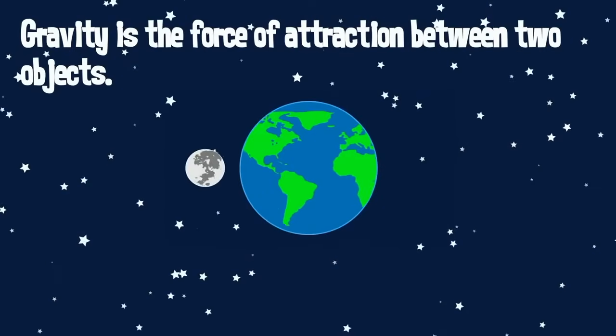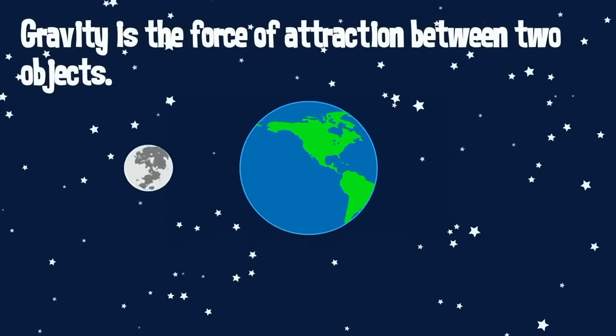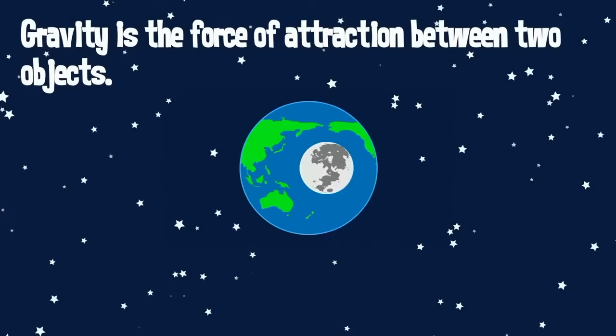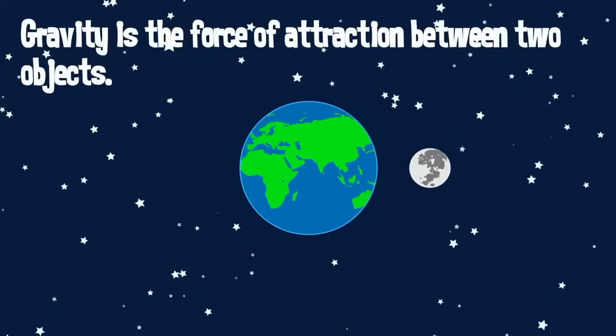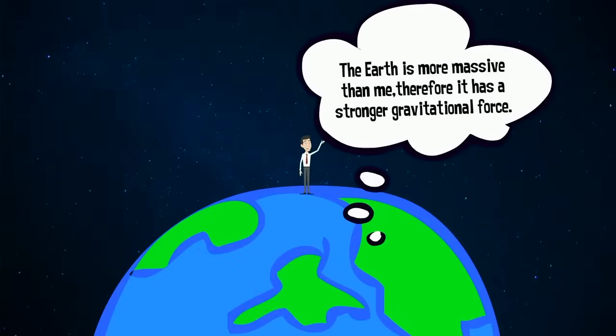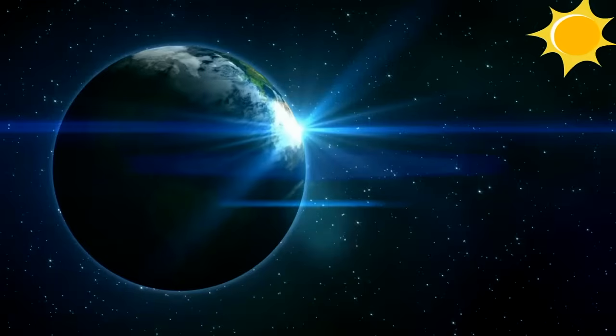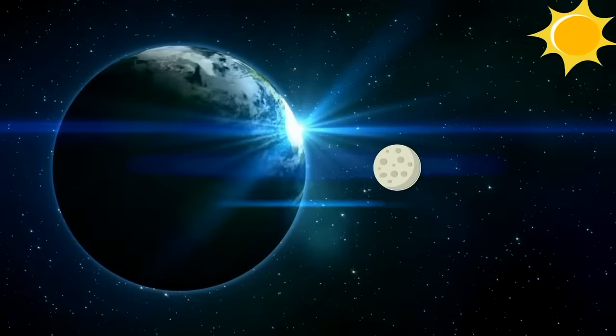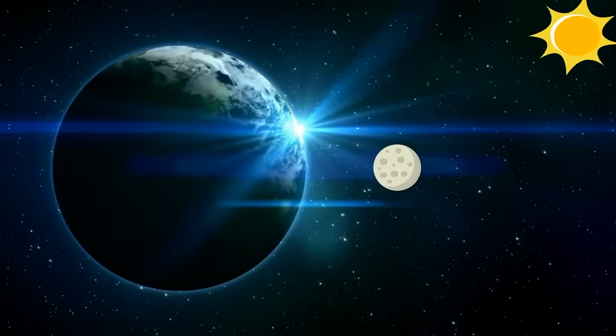Up first, gravity is the force of attraction between two objects. Anything that has mass also has gravity. Objects with more mass have more gravity. Gravity also gets weaker with distance. So the closer an object is to one another, the stronger their gravitational pull is.